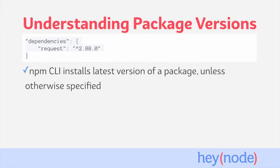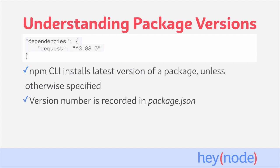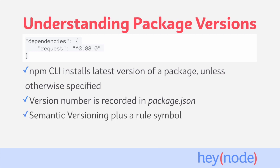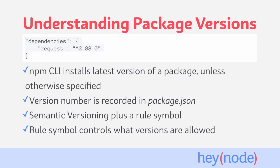When you install a package without specifying a version, the NPM CLI will install the latest version available. An entry will be added to your package.json dependencies field with the name of the package and the version number that you installed. The version number recorded is composed of a caret as a rule symbol, which you can see before the 2 in the example here, and a version number in semantic versioning format. The rule symbol controls what versions are eligible to be upgraded to.